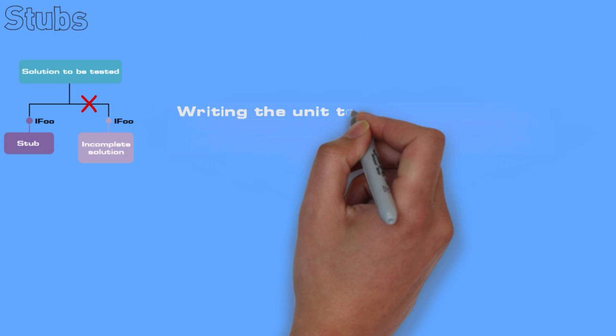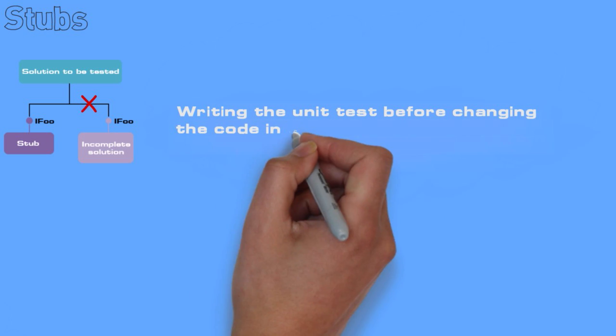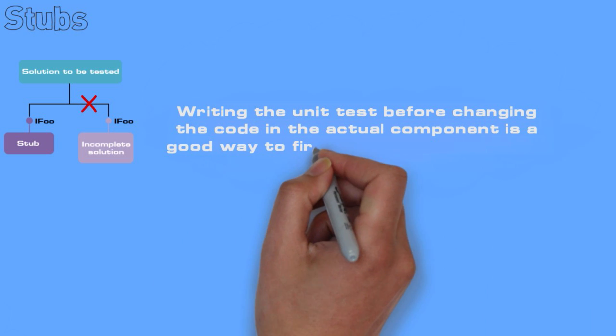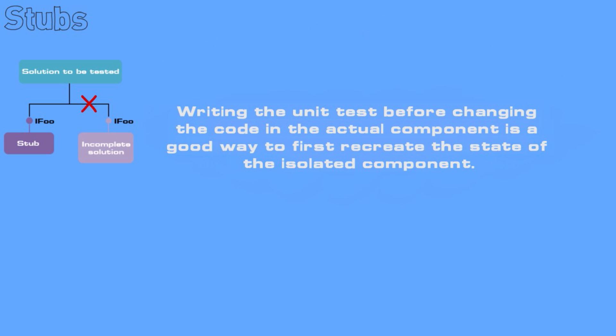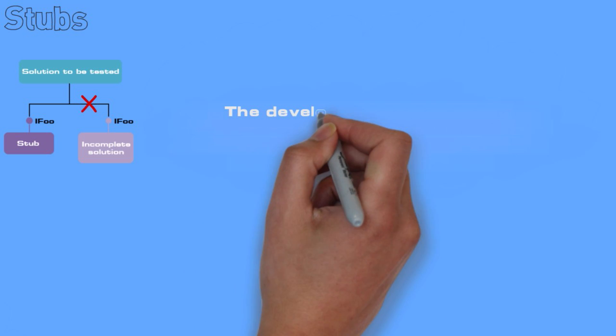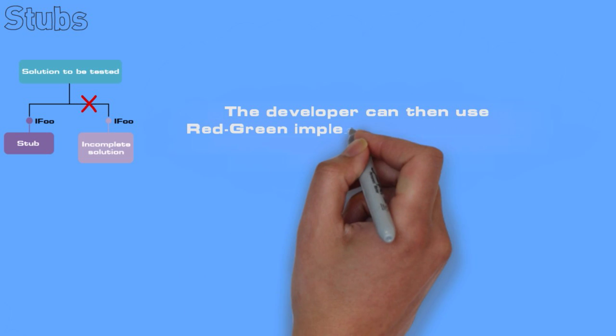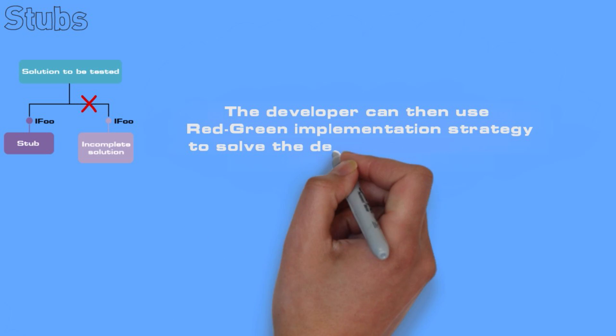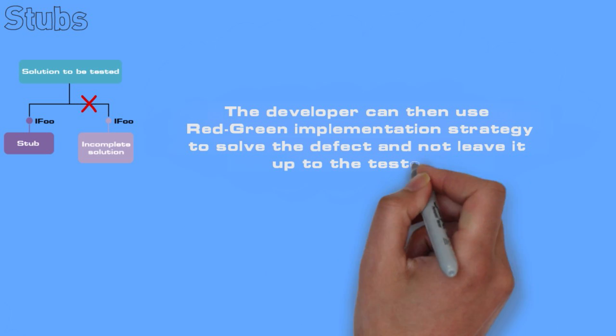Writing the unit test before changing the code in the actual component is a good way to first recreate the state of the isolated component. The developer can then use red-green implementation strategy to solve the defect and not leave it up to the testers.